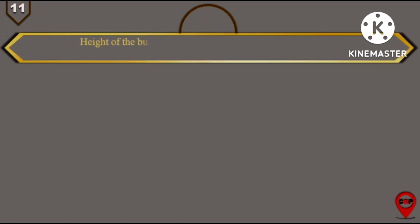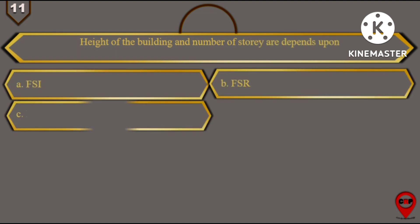Question number 11: Height of the building and number of storeys are depends upon. Options are: A. FSI, B. FSR, C. Both A and B, and D is none of the above.